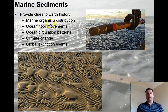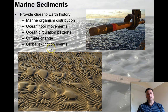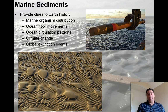For example, marine organism distribution — where do certain types of animals live — is actually determined through the sediments. Ocean floor movements provide more evidence for plate tectonics. Ocean circulation patterns, climate change, and global extinction events can all be read from the sediments. This is a picture of a machine that has taken a sediment core from the seafloor — they drive a pipe into the ground, pull it back up, and the mud stays inside the pipe. Those sediments can then be analyzed to learn about these different events.